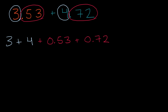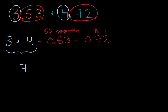Three plus four is straightforward — that's just going to be seven. But what is 53 hundredths plus 72 hundredths? Well, three plus two is going to be equal to five. And then 50 plus 70 is equal to 120. So this is going to be 125 hundredths.